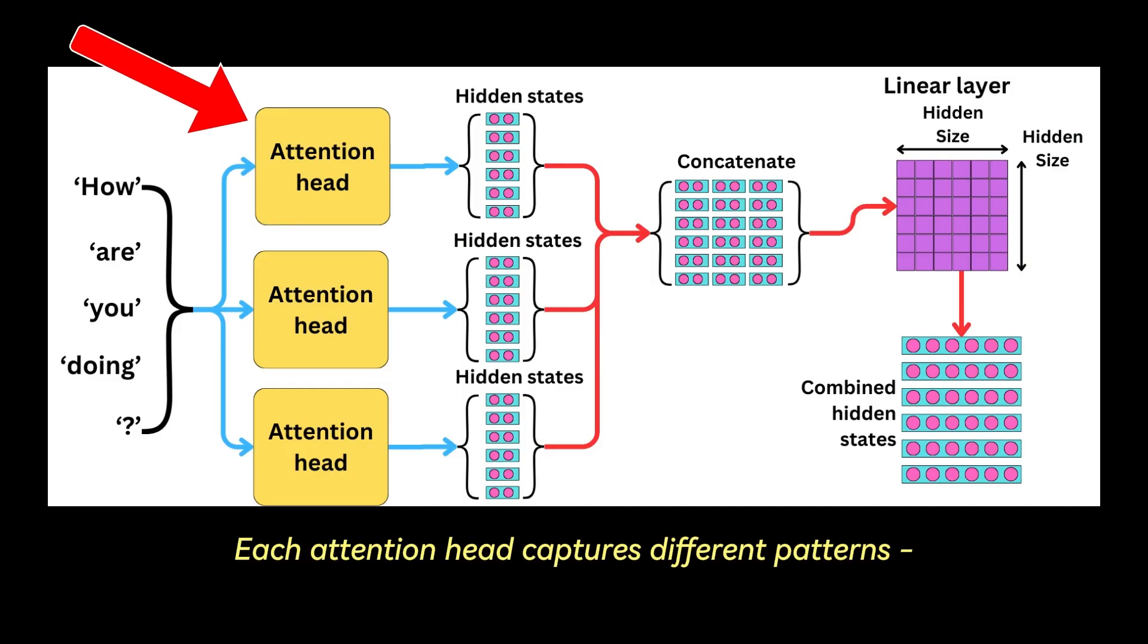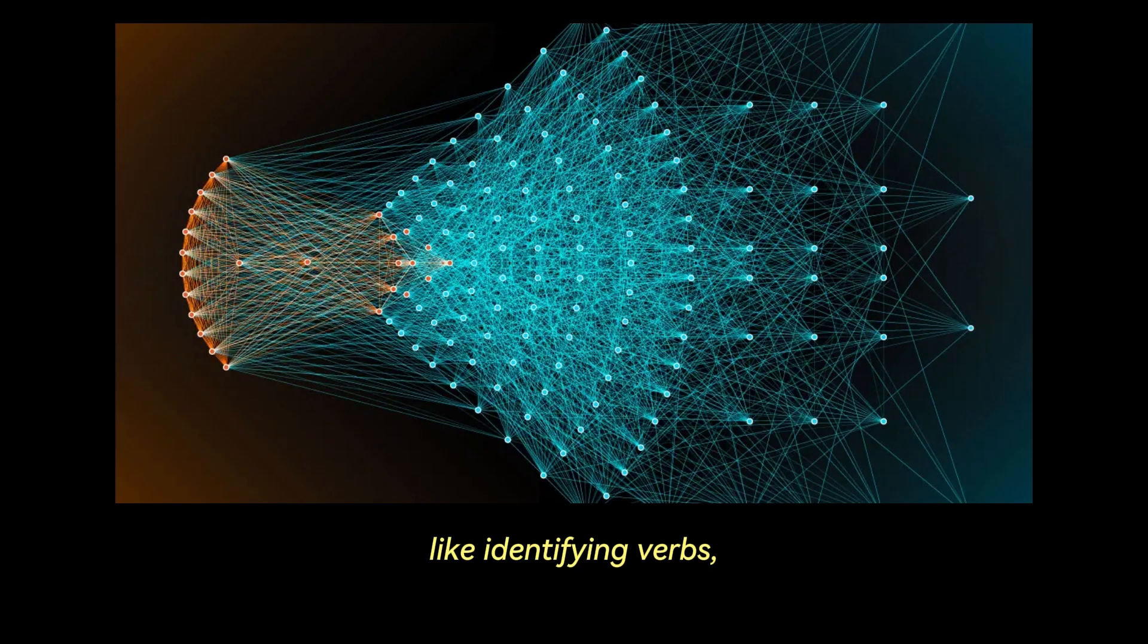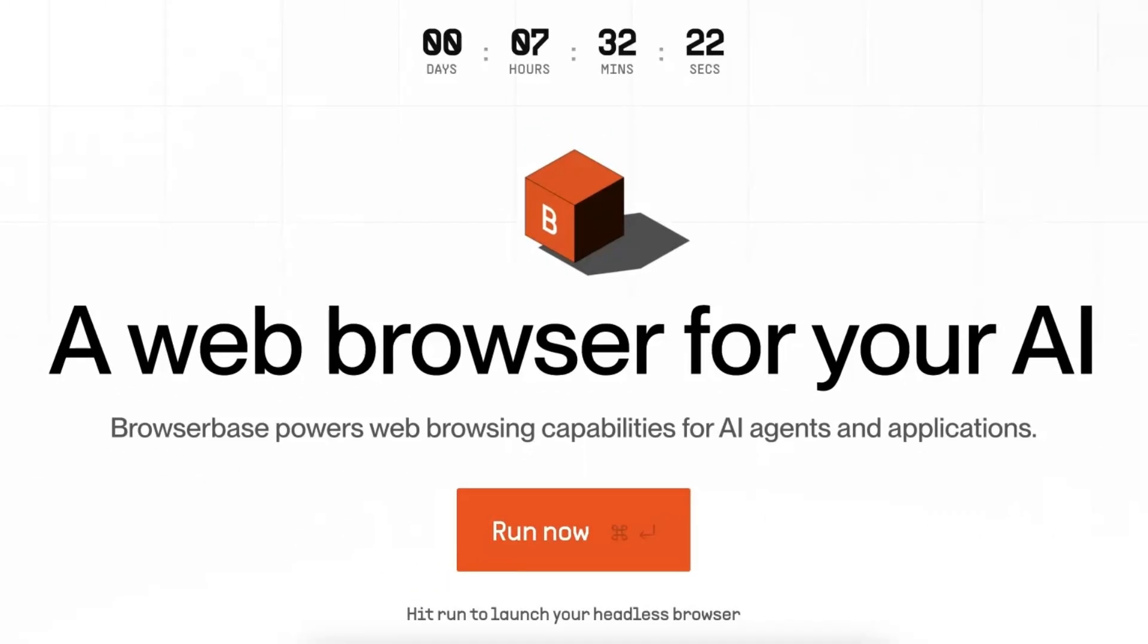Each attention head captures different patterns, and by aggregating them, the model gains a multifaceted view of the sentence. As information flows through layers, early attention may focus on structure, like identifying verbs, while later layers integrate meaning and intent. I want to give a huge thank you to today's sponsor, BrowserBase.